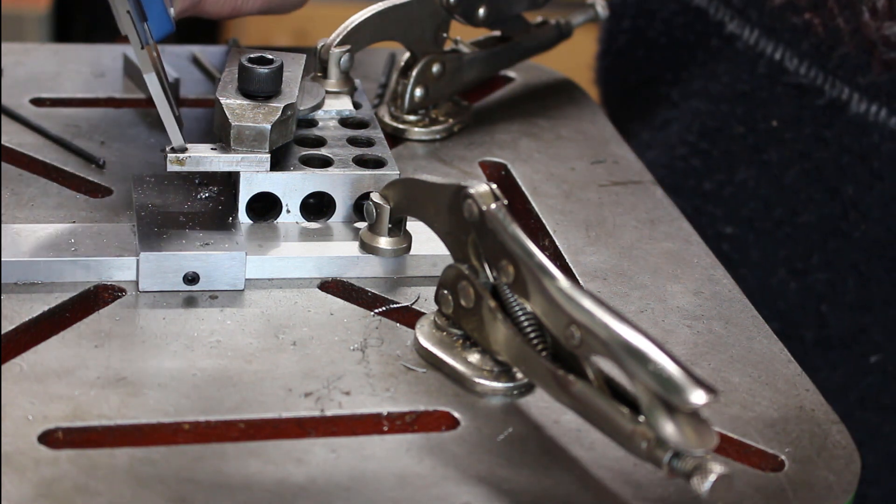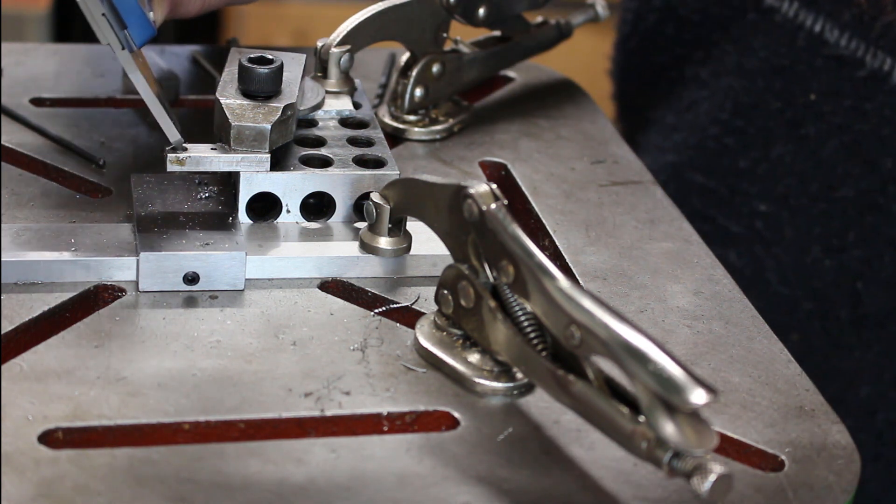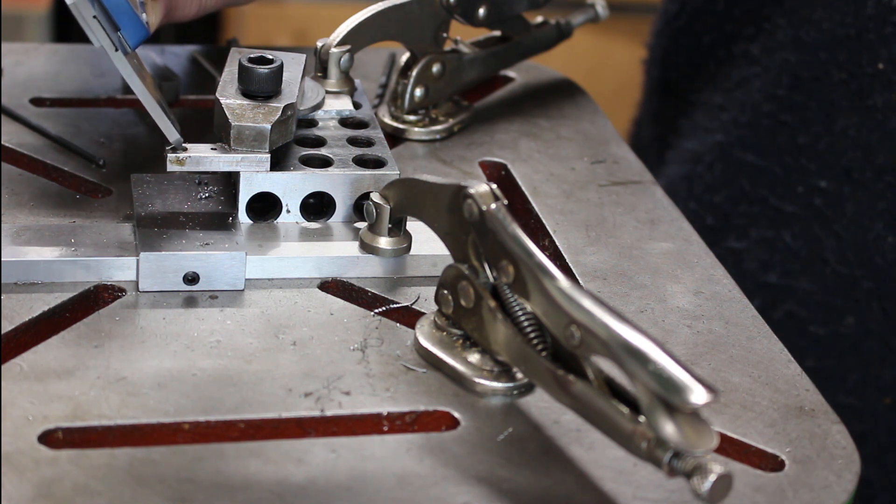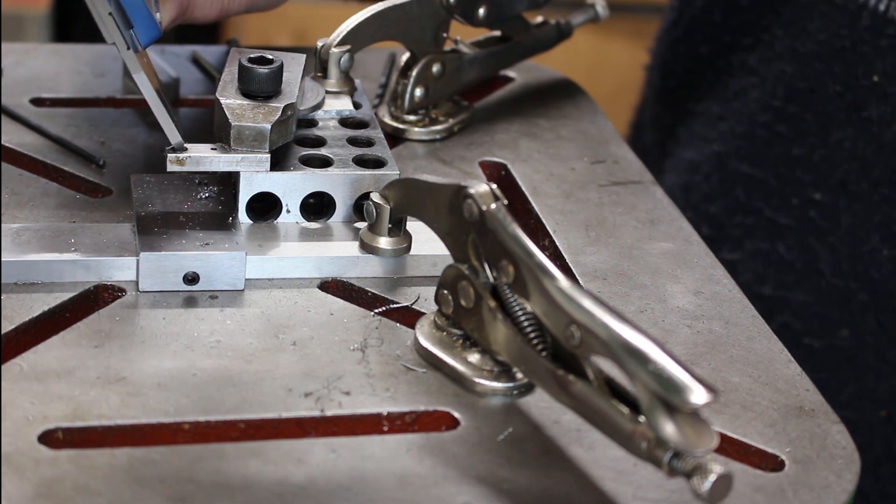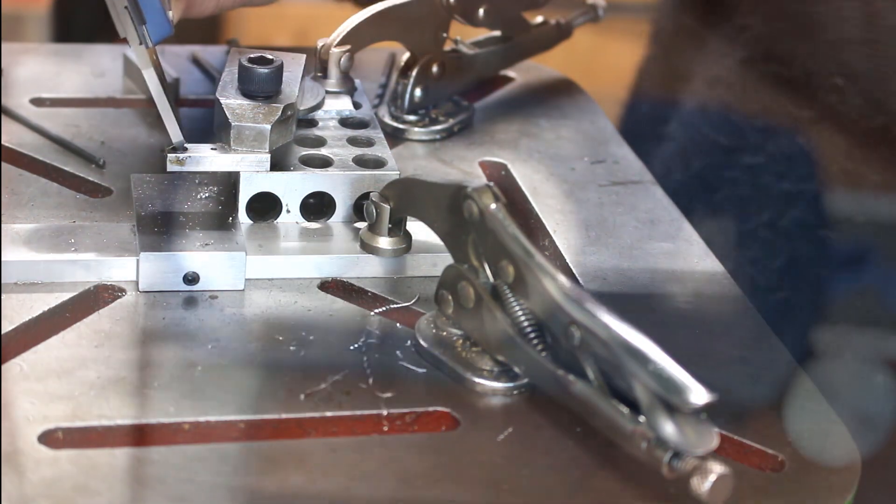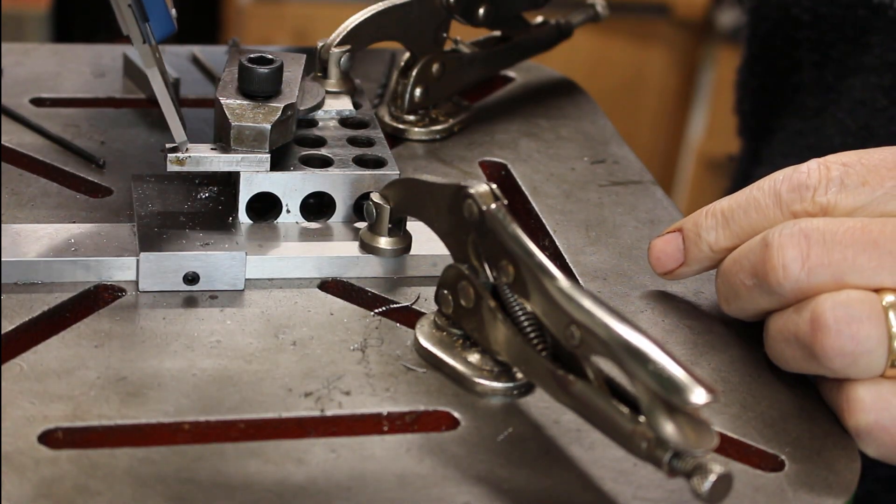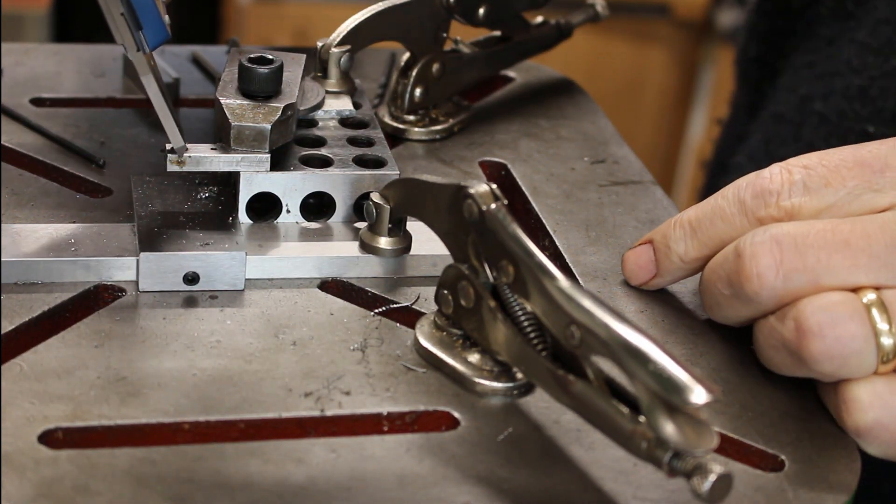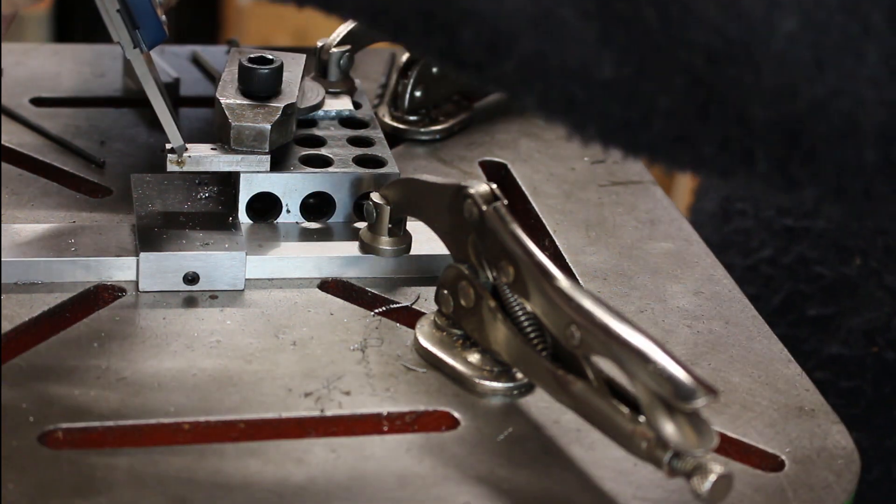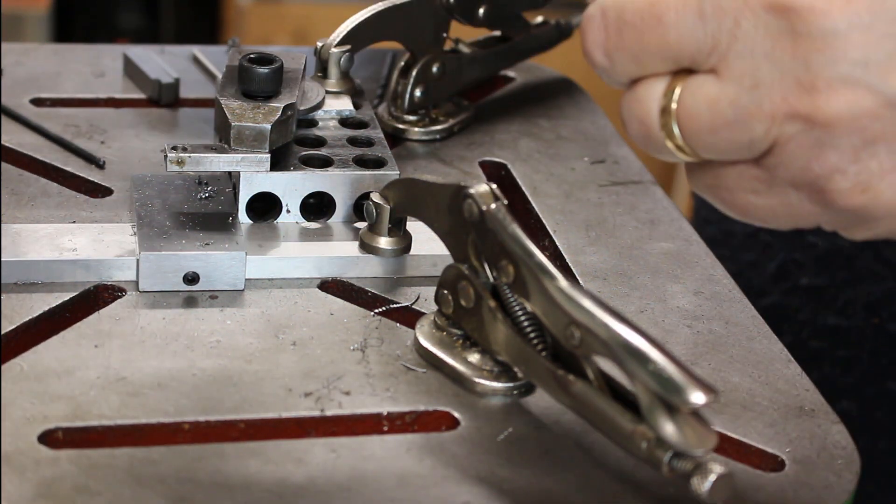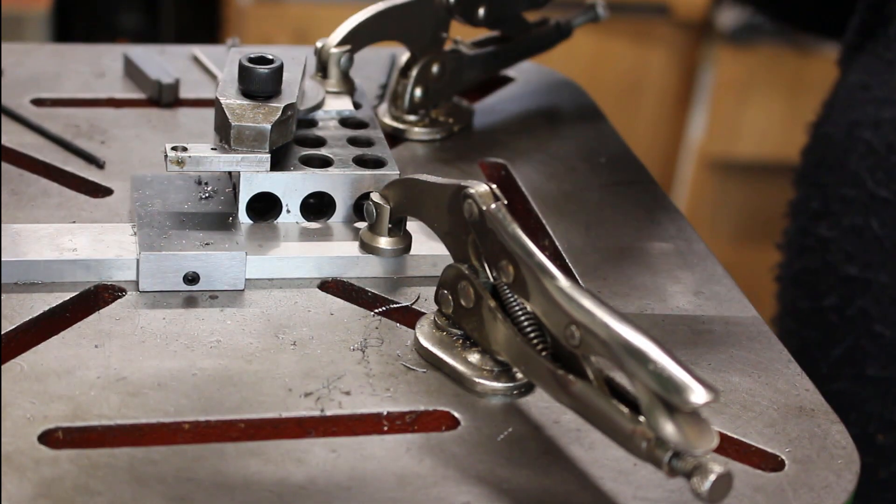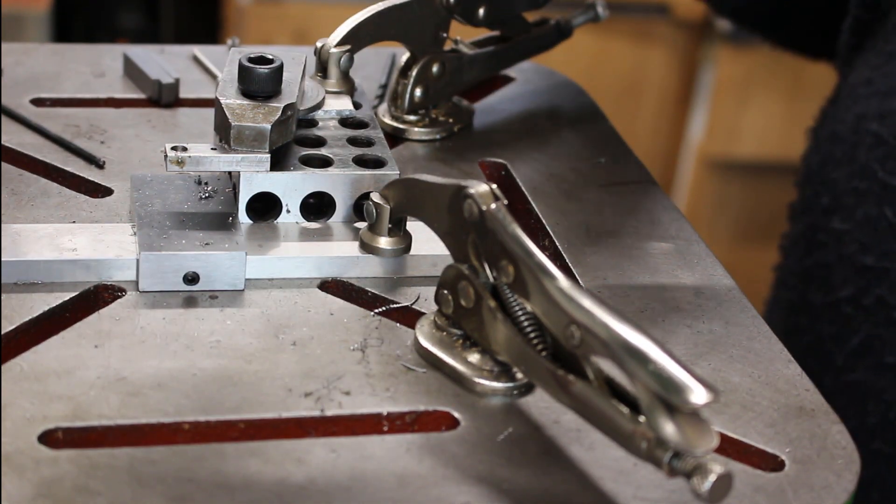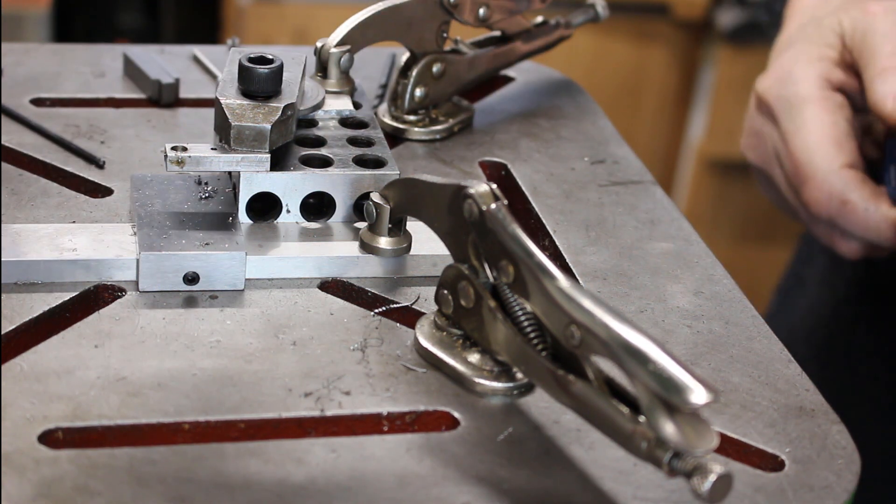I'll just measure the thickness between the hole and the side, it's 1.52. Check the other side, 1.49. So that's 0.03, that's a thou difference, so it's half a thou off center. I think that's pretty good.